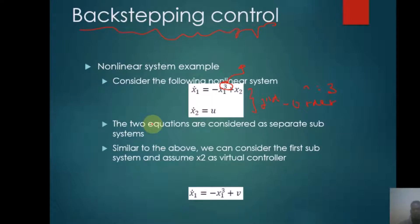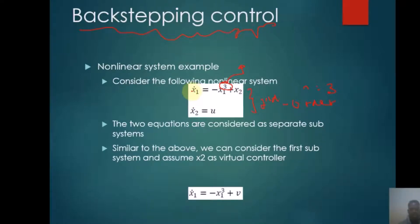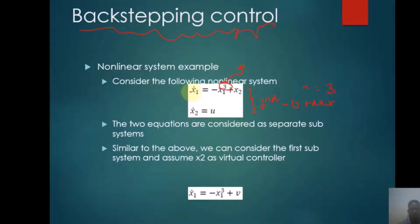There are two steps and we implement the same working procedure as in the last video. If there is any confusion about the introductory part, you should go to my first video for clarification on the steps to compute this kind of application using backstepping control. In this class we have two substates: substate 1 and substate 2.